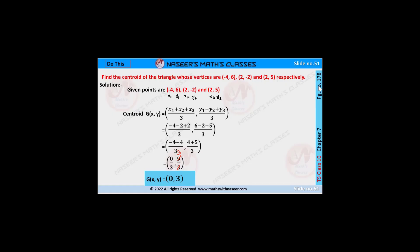Do this page number 178, chapter 7, coordinate geometry. Find the centroid of the triangle whose vertices are given: minus 4 comma 6, 2 comma minus 2, and 2 comma 5 respectively.